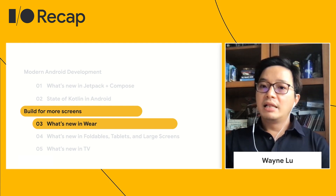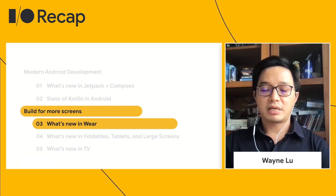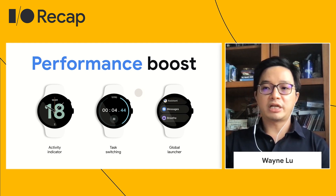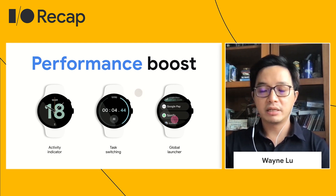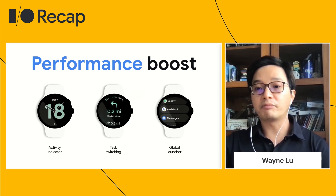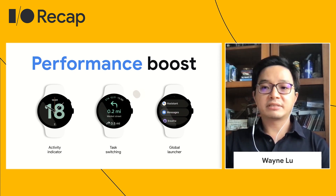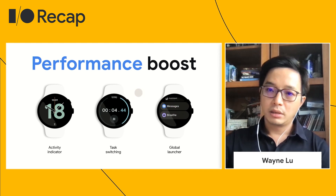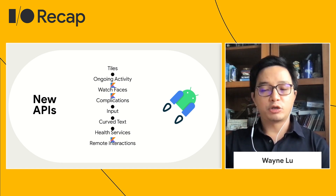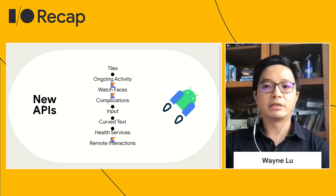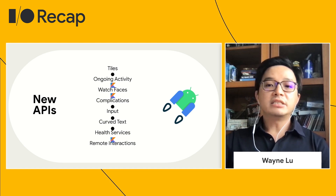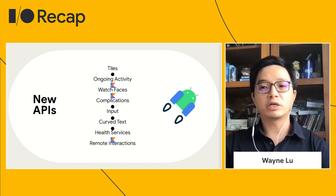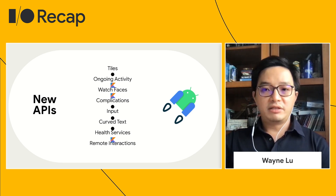Now that we've covered modern Android development, let's move on and talk about building for more screens. Let's start with what's new in Wear. Powered with the latest chipsets, the next generation of Wear smartwatches will be more performant and power efficient. We've optimized the entire Wear OS experience — apps start up to 30% faster, and animations and transitions are super smooth. Over the last year, we have launched many new Wear APIs on Jetpack, including the latest Tiles and Ongoing Activity APIs, which follow best practices, reduce boilerplate code, and work consistently across Wear OS devices and versions.